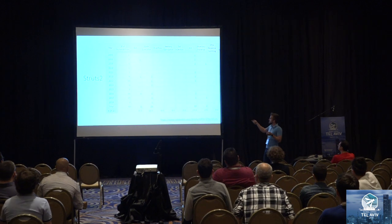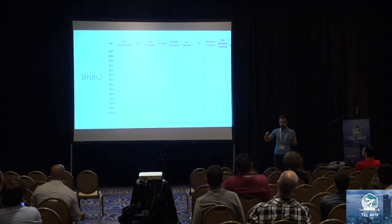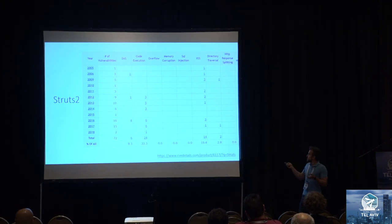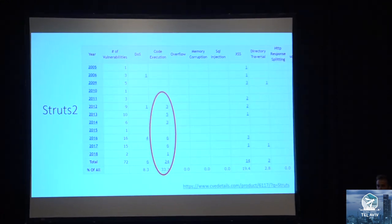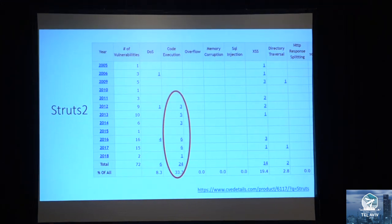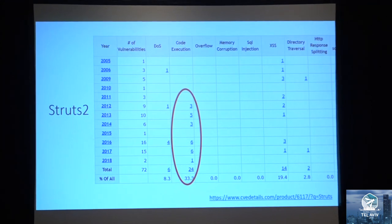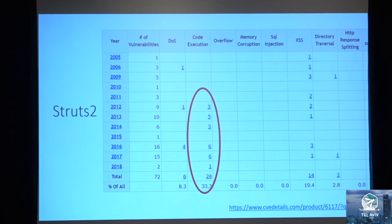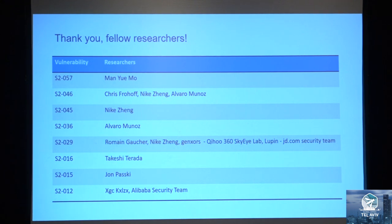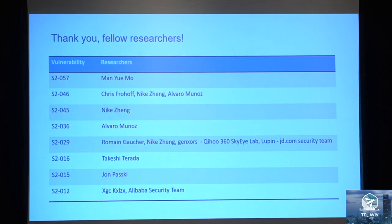This is the table of CVEs divided by CVE type. As you can see, Struts has 24 code execution vulnerabilities. They kept popping up every year, several vulnerabilities per year. I would love to thank all the researchers who found these vulnerabilities, because without their work, my research won't be possible.